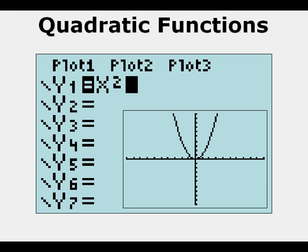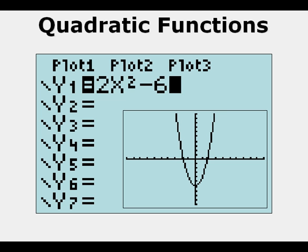Here's our quadratic parent function, y equals x squared. If we change the parameters, we make it 2x squared minus 6. We make the parabola narrower and translate it down 6 units.